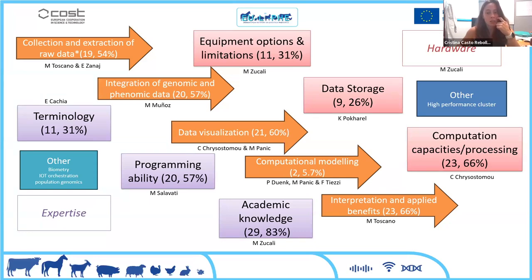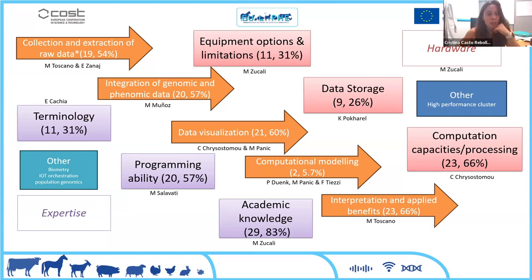It is important to know the visualization tools and software to understand complex data relationships. The main part of the paper is the section on computational modeling. There are many different computational models, and choosing which model to use can be complicated. This section will give general guidelines for choosing an appropriate model, and provide examples of typical data structures and some tips in phenomics, along with suggestions for suitable models.